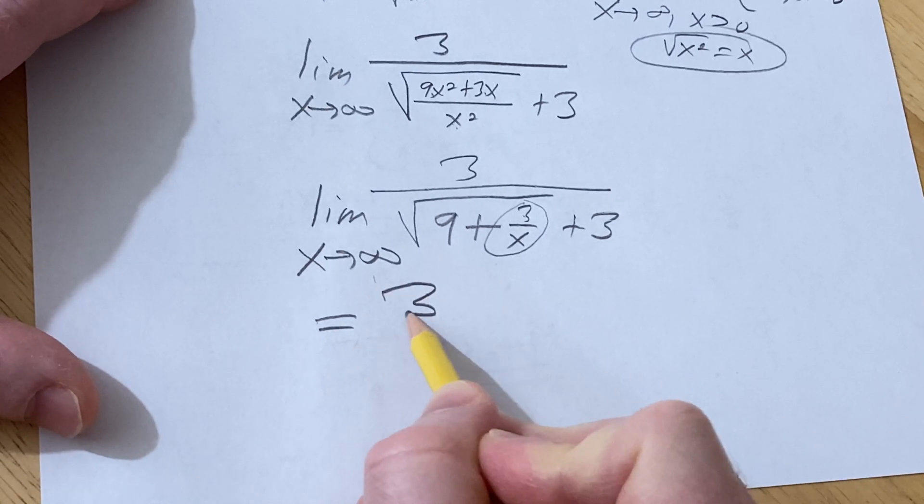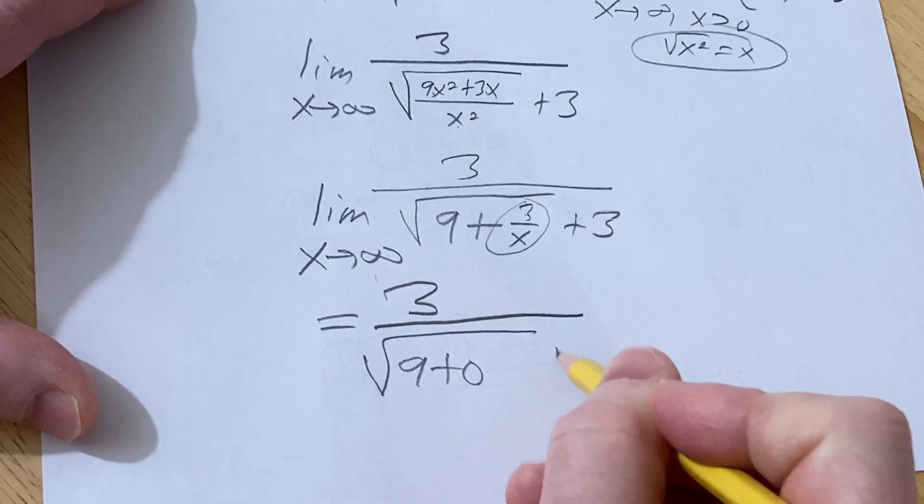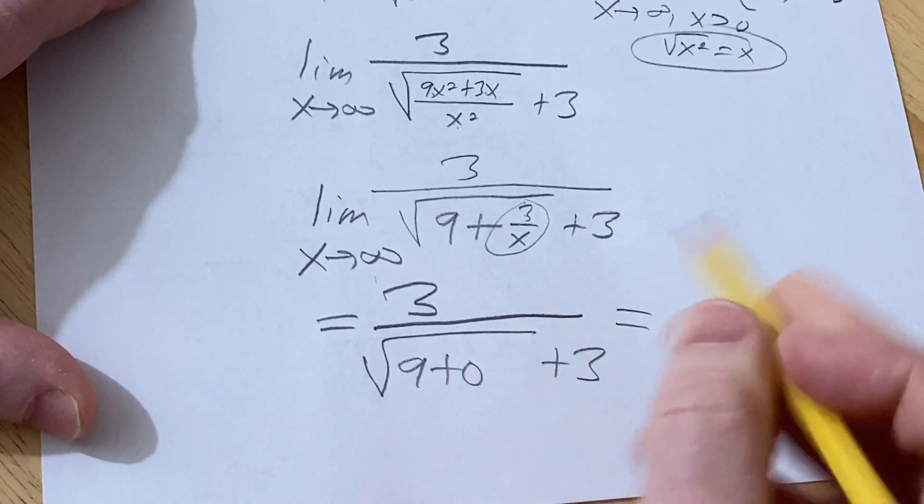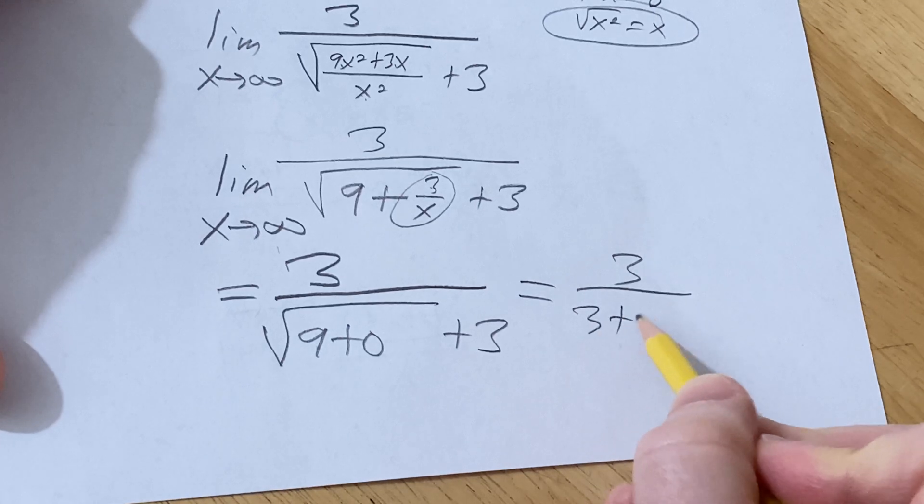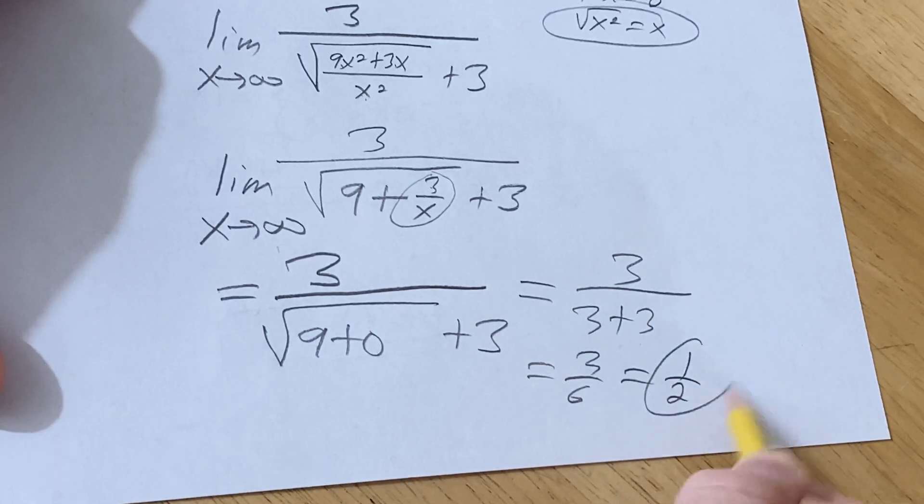So this is going to be 3 over the square root of 9 plus 0 plus 3. The square root of 9 is 3, so you get 3 over 3 plus 3. So you get 3 over 6, so you just get 1 over 2 and that's the answer.